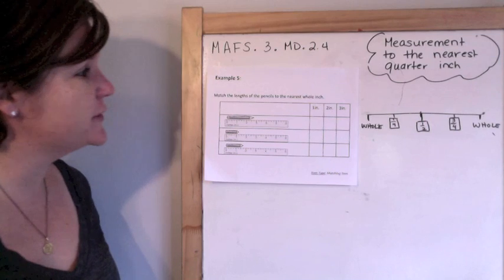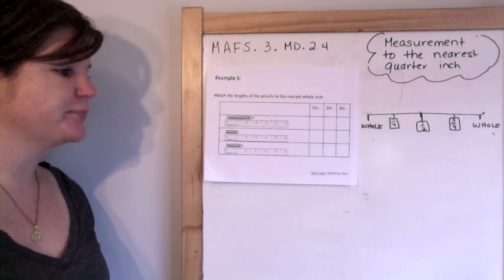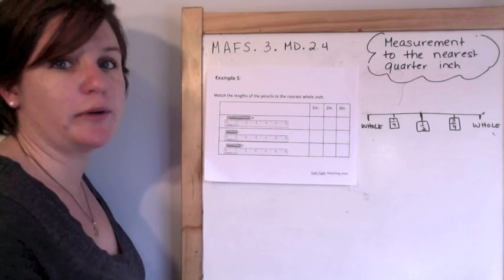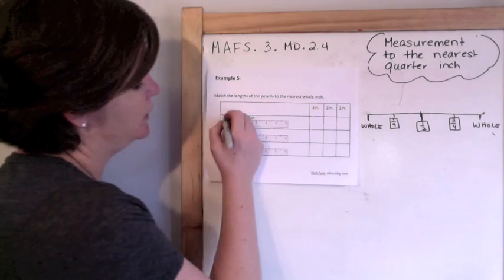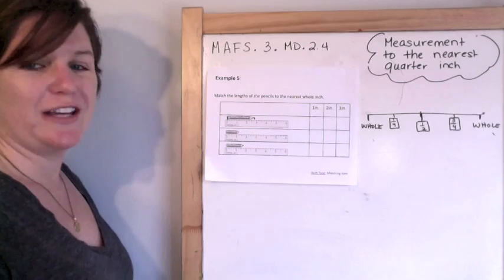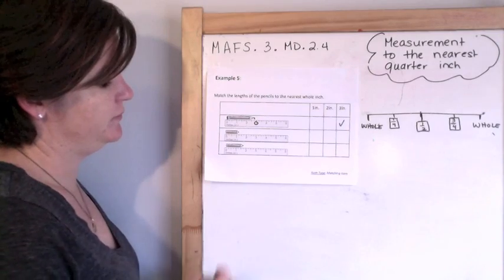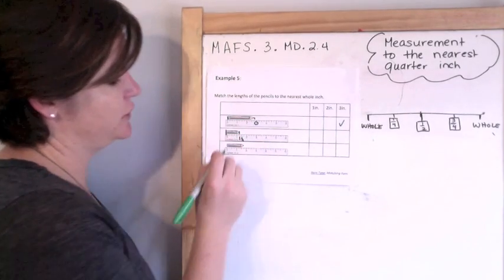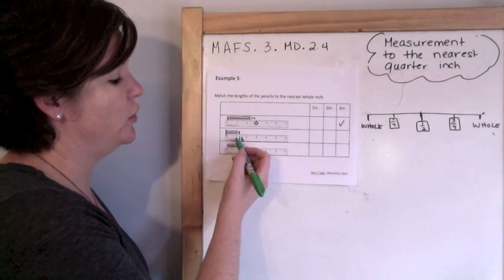All right. Last problem for today for the standard. Match the lengths of the pencil to the nearest whole inch. This is a matching item. So I'm just going to check which column is correct. So I've got different pencils here with the rulers already given. And I've got one inch, two inch, or three inches in the box. So this one starts at zero and ends at two and three quarters of an inch. So the closest, it's actually closer to the three than the two inches here. I'm starting at my zero. It's right here at one and one fourth inches. But I'm not measuring to the nearest quarter inch.